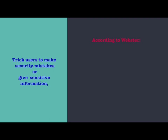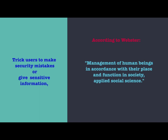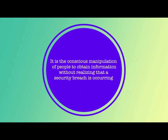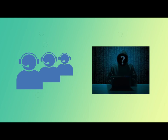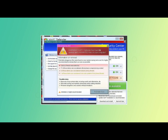According to the Webster dictionary, social engineering is the management of human beings in accordance with their place and function in society — applied social science. It is the conscious manipulation of people to obtain information without realizing that a security breach is occurring. It may take the form of impersonation via telephone, in person, or through email. Some emails entice the recipient into opening an attachment that activates a virus or malicious program into your computer.